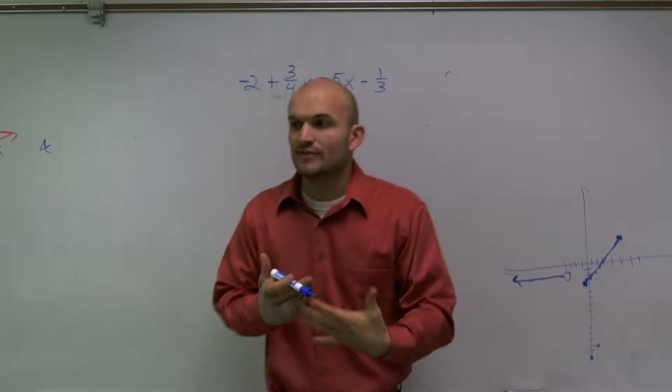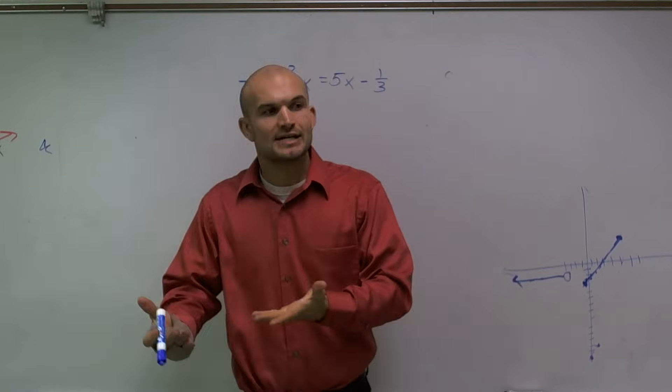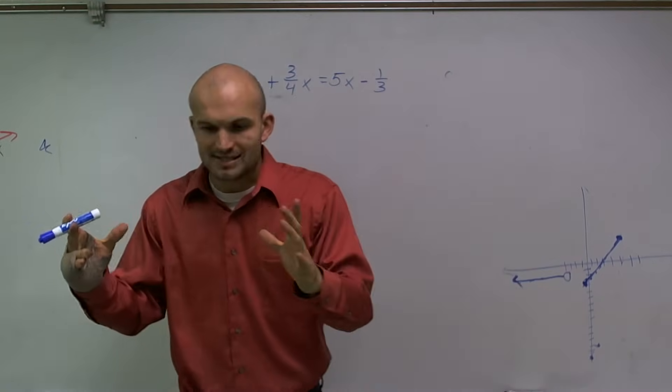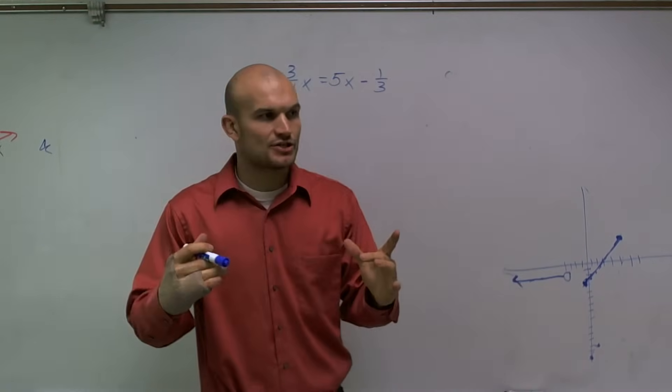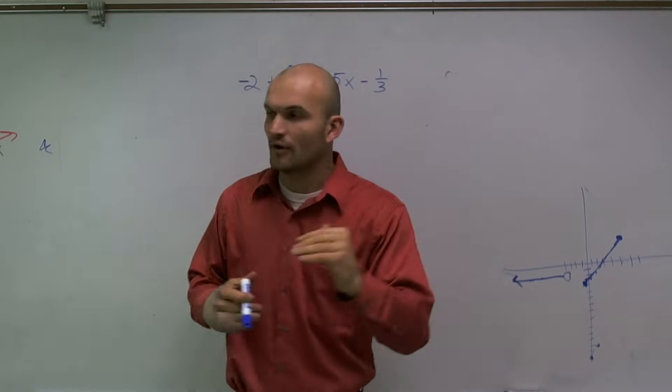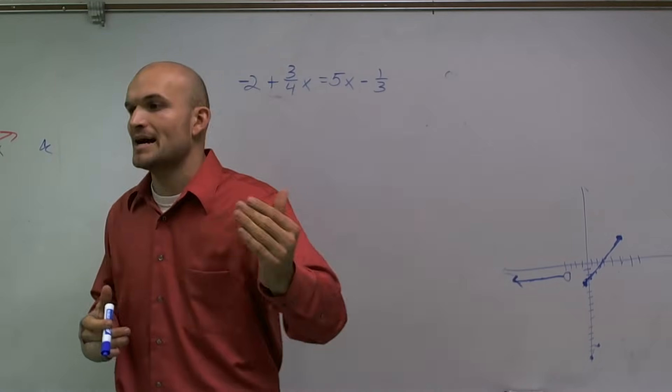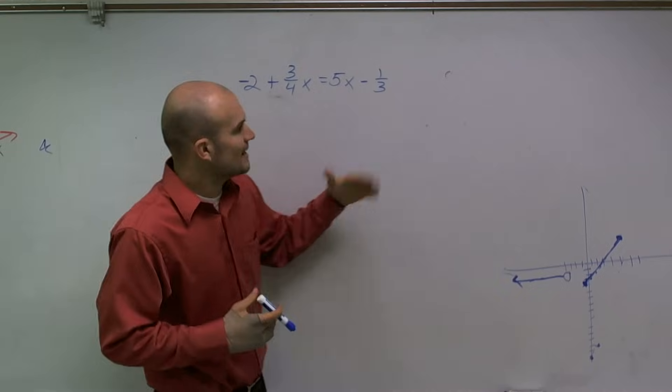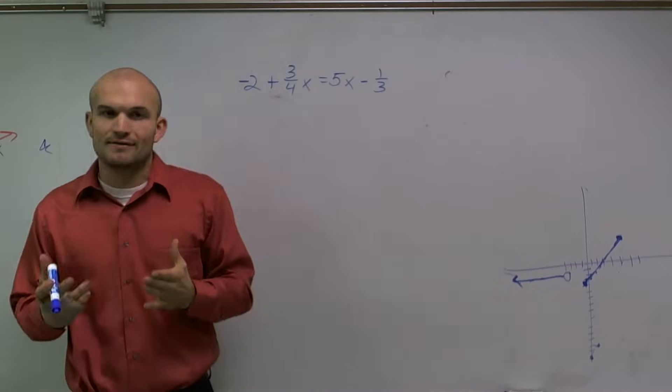To undo division, we do multiplication. Think about it this way: a number, let's say 8, divided by 2 and then multiplied by 2. Well, 8 divided by 2 is 4, and 4 multiplied by 2 gives you back 8. They undo each other—what we call inverse operations.